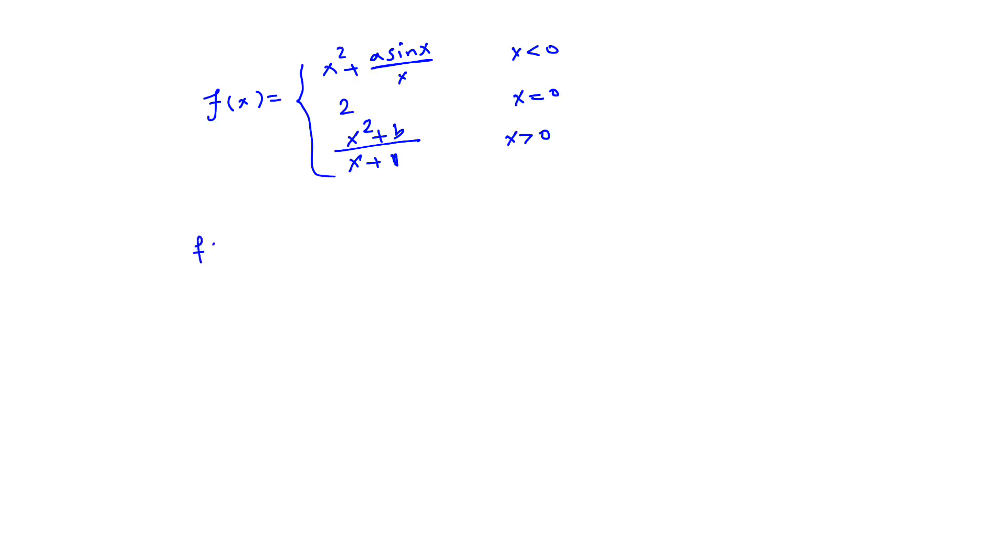So f(0) is given as 2. The limit of f(x) as x approaches 0 from the left side equals the limit of x² plus a sine x over x as x approaches 0 from the left side.